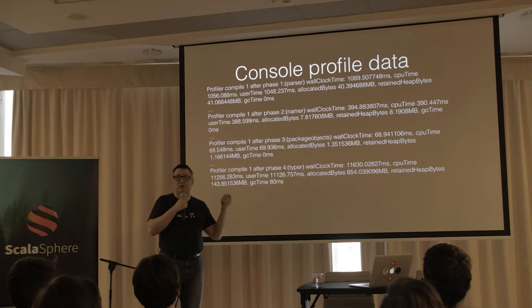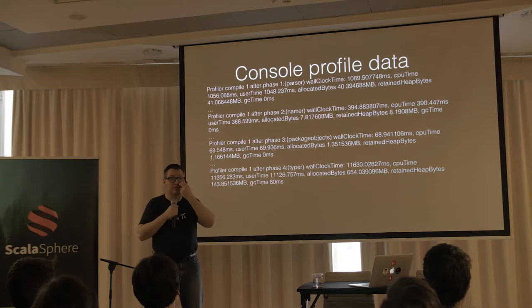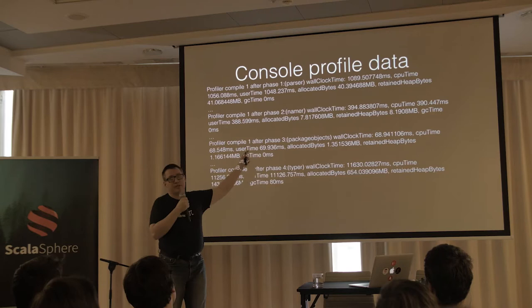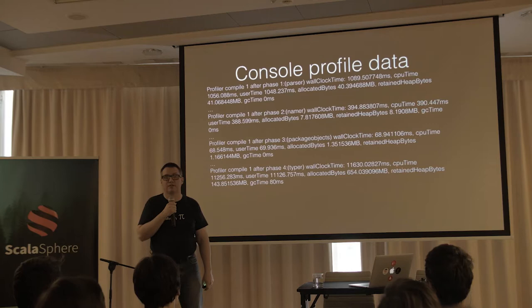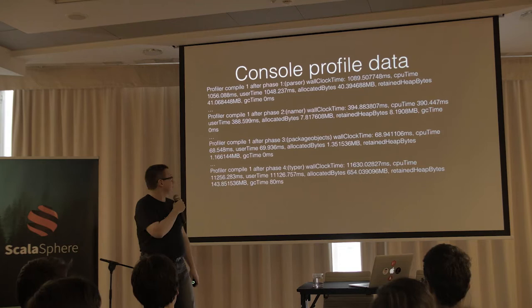What do you get? This is what you get out of the profiler tool with console logging for phases. For each phase — like NEMA — you get the wall clock time, the CPU time, the user time, and allocated bytes. There's actually a hook in one of the Sun MX beans where you can get the number of allocated bytes if you're using the Sun JVM — it's a really useful stat to watch. If you dump it to file, you get a nice parsable CSV.